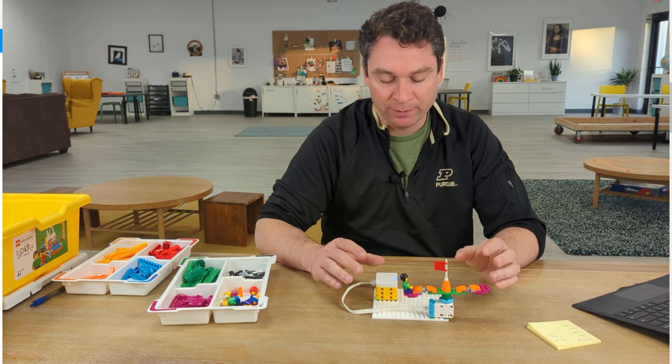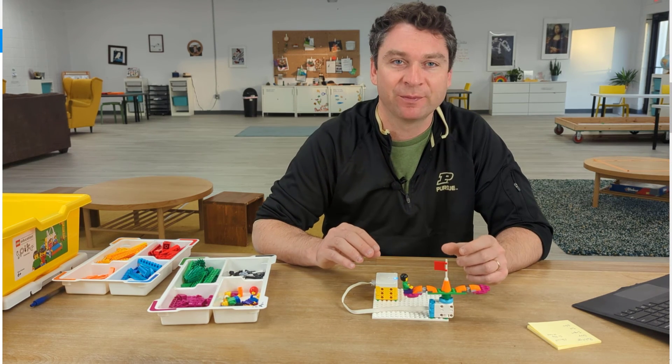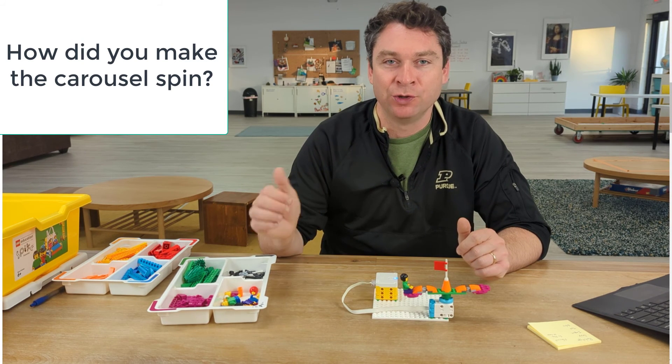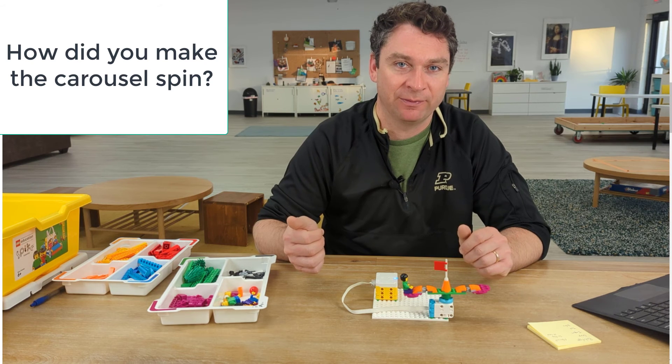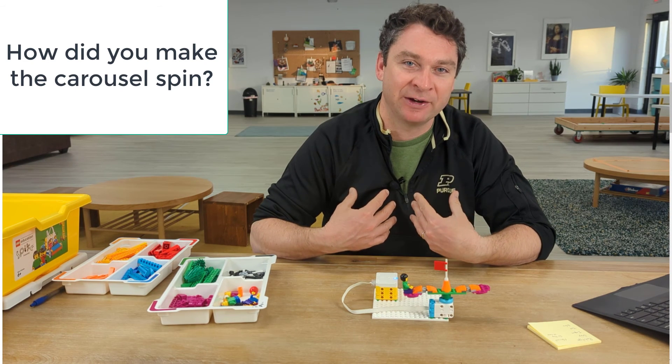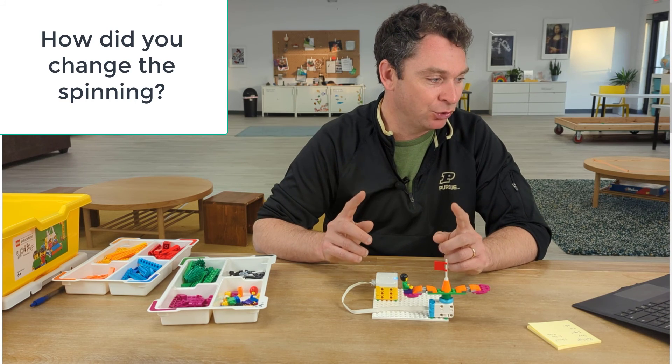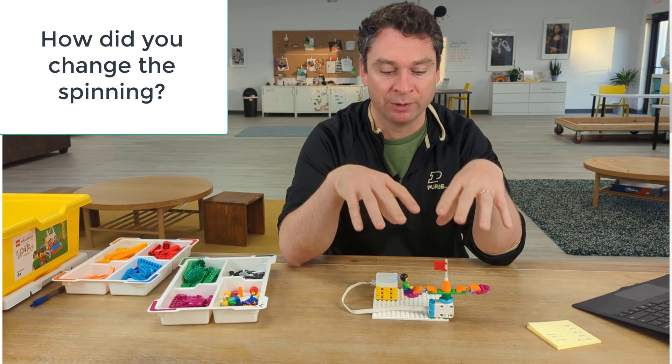After you've made your improvements to the code, I want you to answer just a couple questions for me. How did you make your carousel spin? You used blue motor blocks, but then how did you change how it spins? For me, I made it go faster and I made it change directions a couple times. How did you upgrade the code that we were using?